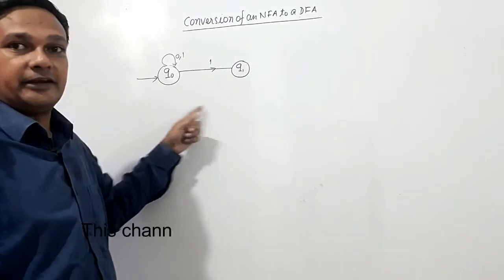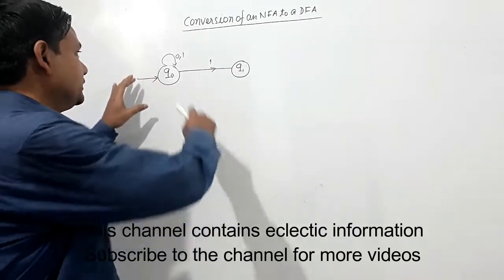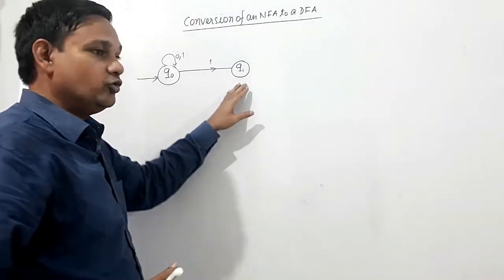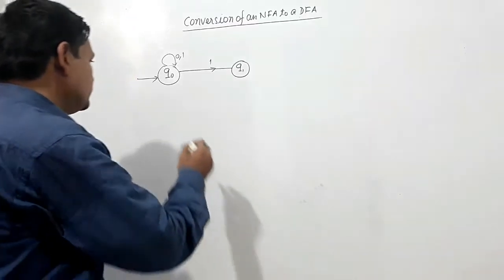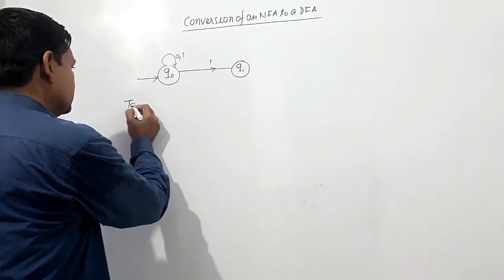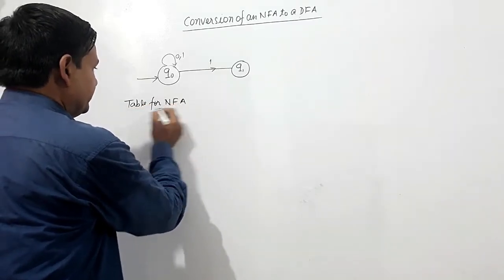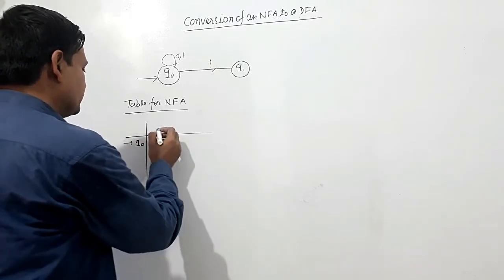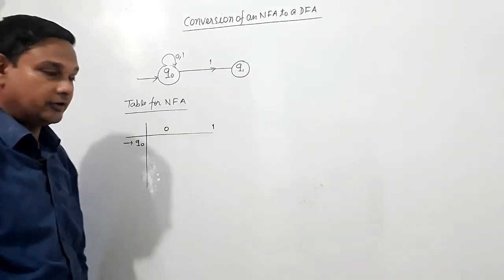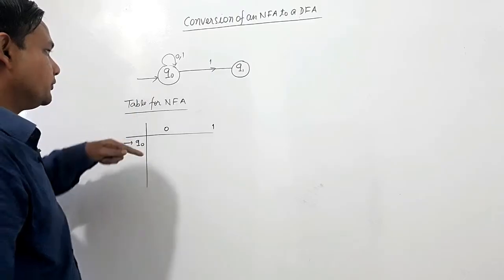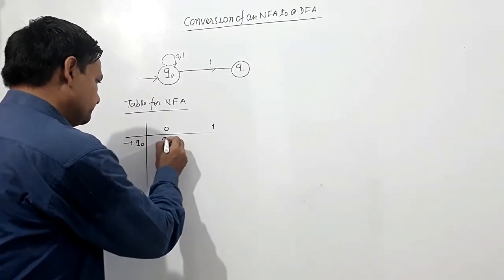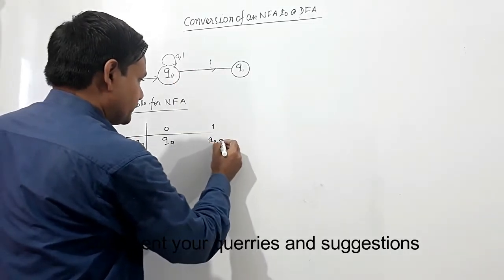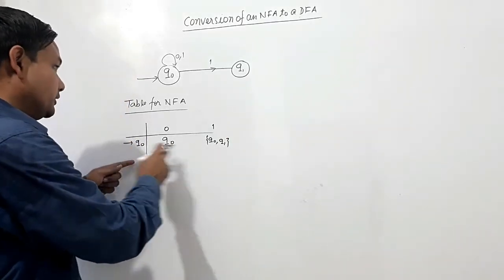Here we shall convert this NFA to a DFA. You can see this is an NFA because at zero transition at Q naught, but at one transition you get Q naught as well as Q1. At Q1 no transition is shown. This is the table for the NFA. Symbols are 0 and 1. On 0 transition at Q naught is Q naught, and at one transition it is Q naught as well as Q1.